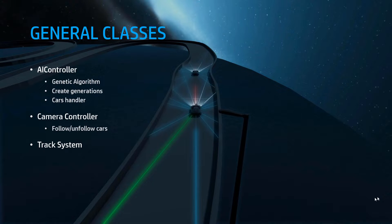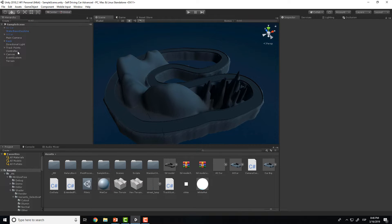The project has been divided into different classes. The most general classes are the AI controller, the camera controller, and the track system. The AI controller is in charge of the genetic algorithm and the creation of generations and cars. The camera controller helps us follow and unfollow different cars and have a general perspective of the track. The track system helps with the positioning of each car.